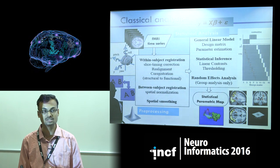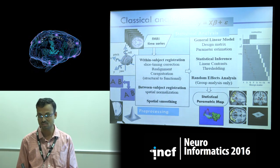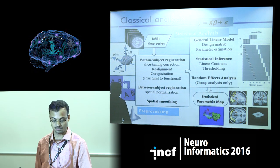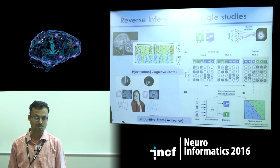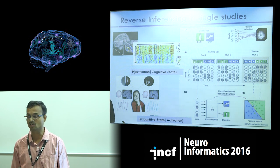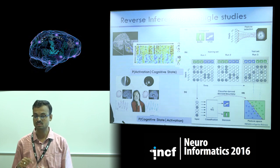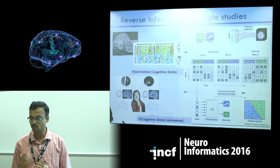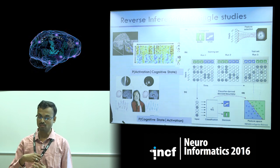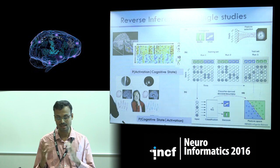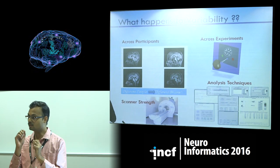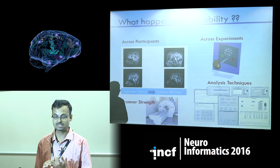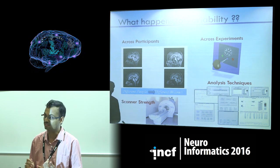We have had discussions about the traditional software-based approaches where people use statistical parametric mapping or an equivalent for analyzing brain imaging data. More recently, from the last five, ten years, people have also been using machine learning methods for reverse inferencing. Rather than finding activation in the brain given a cognitive state, you are now trying to decode the brain state based on the activations.